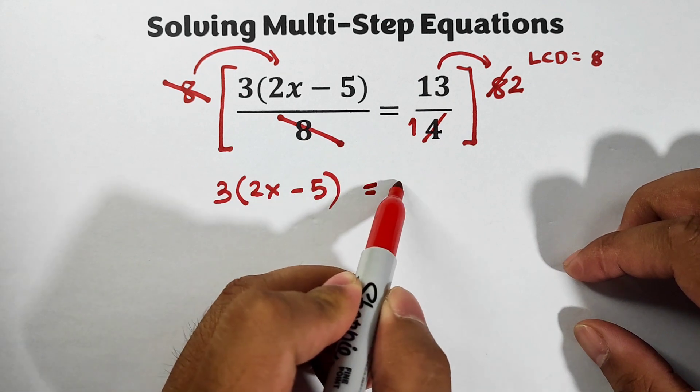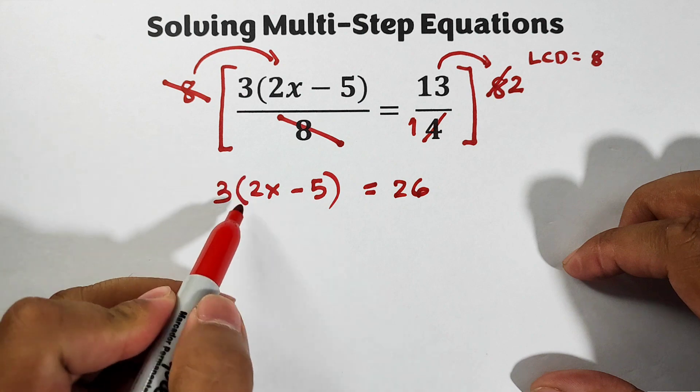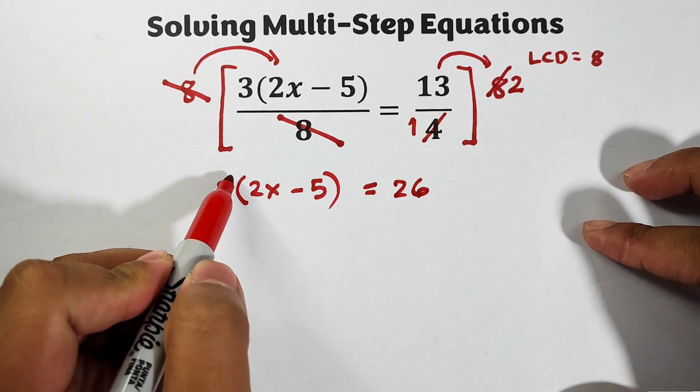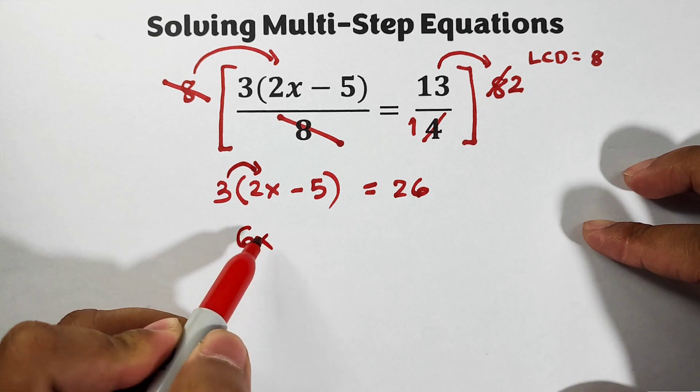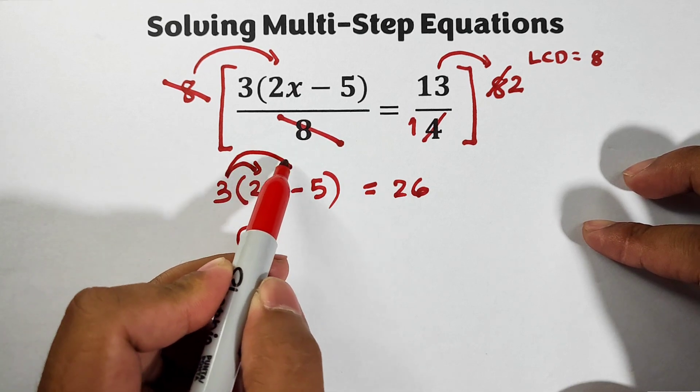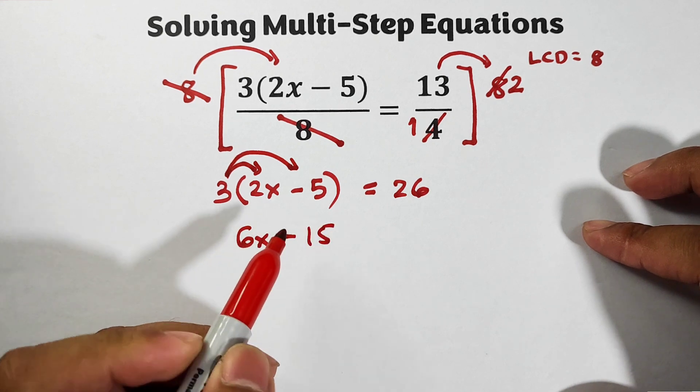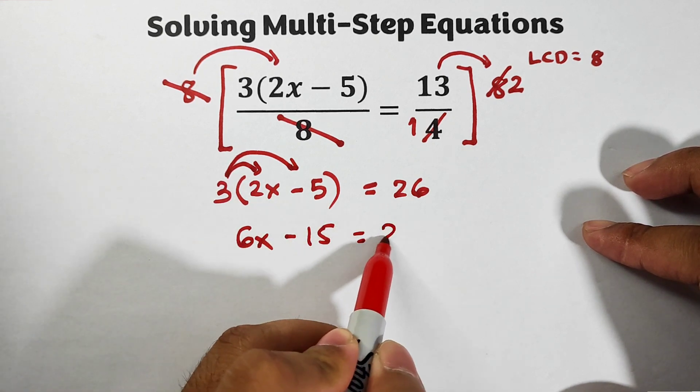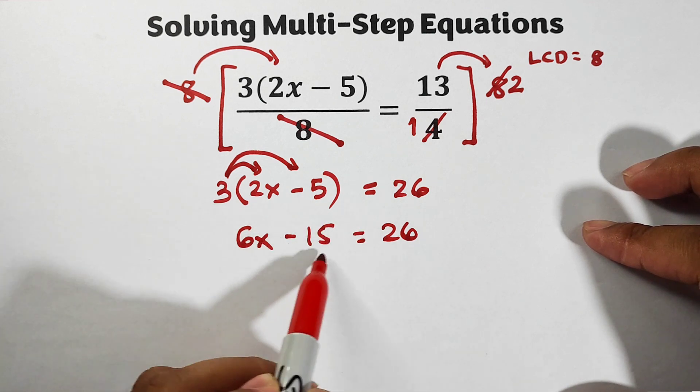On the left side we will use distributive property. 3 times 2x is 6x, then 3 times negative 5 is negative 15, is equal to 26.